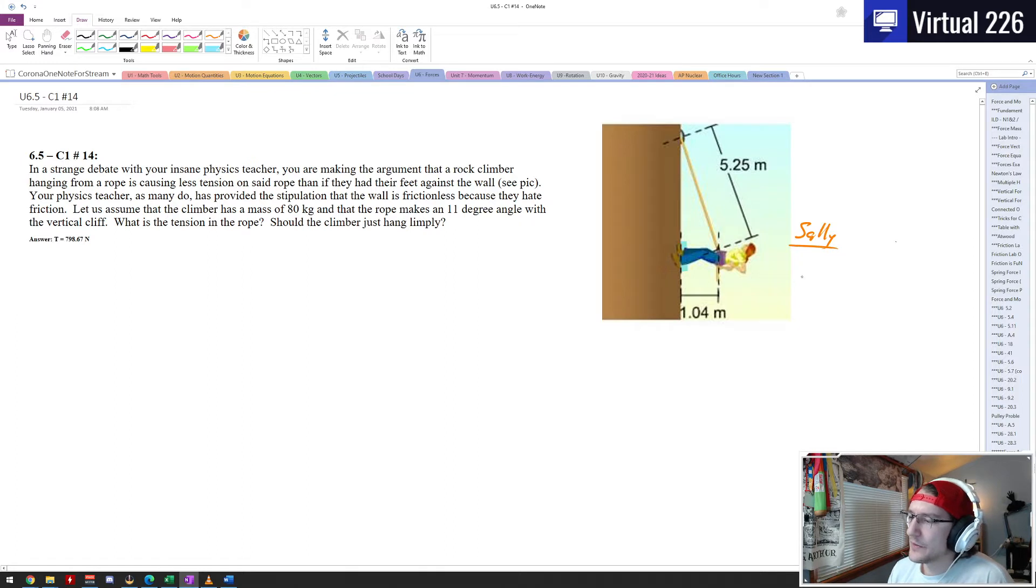The only thing we can assume here is that our climber, we'll call them Sally, they have a mass of 80 kilograms. The only other thing we know in this problem is that based off the length of the rope and how far their legs are, there is an 11 degree angle between the rope and the vertical wall.